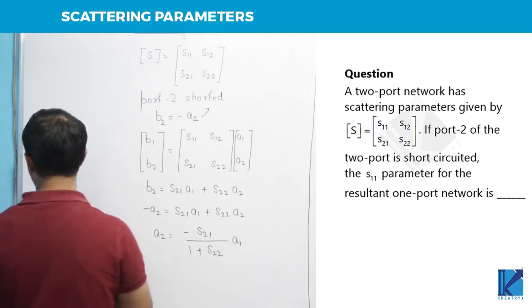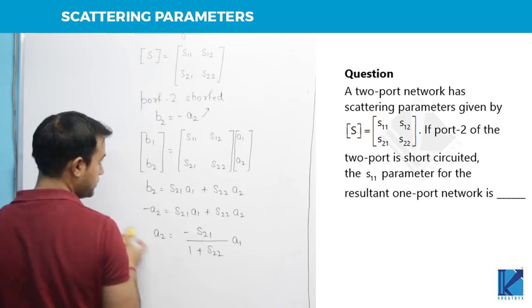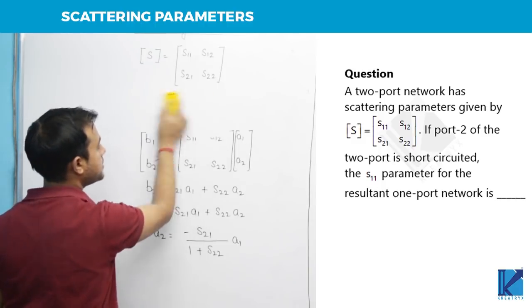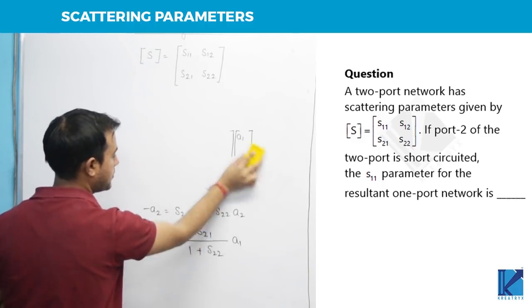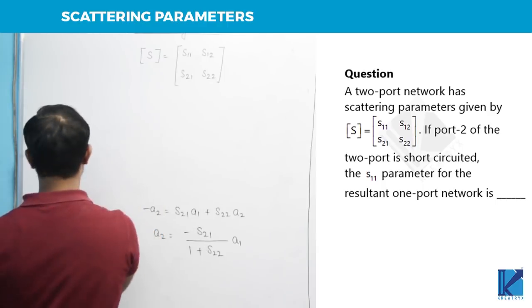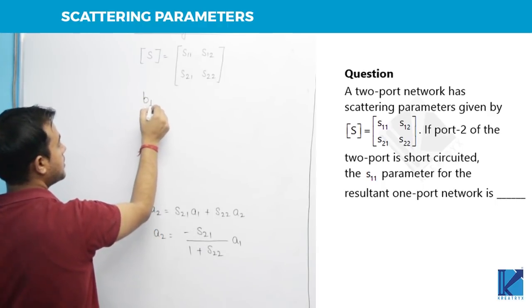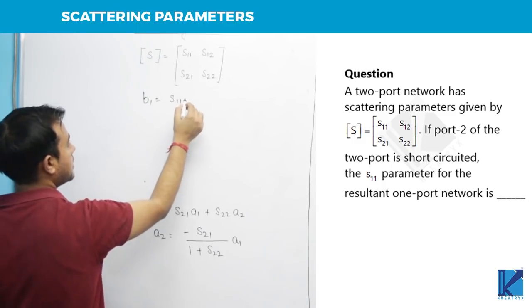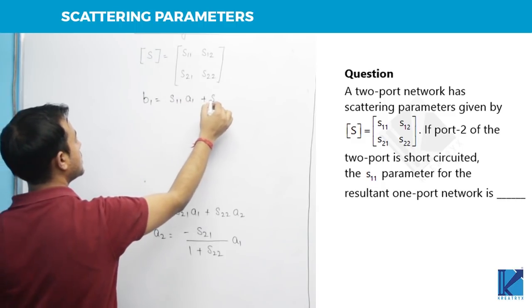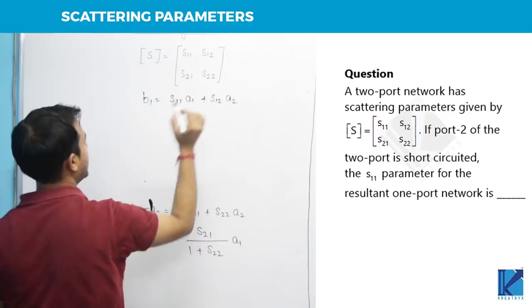Now, once I have gotten the value of A2, it has asked me the value of S11. Now from these scattering parameters, if I write B1, B1 can be written as S11 A1 plus S12 A2.